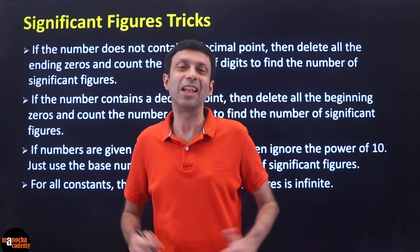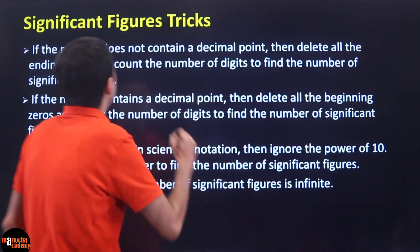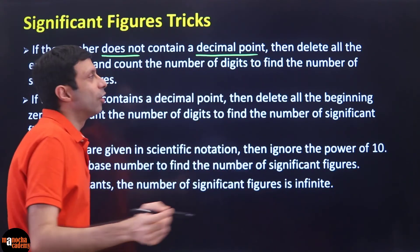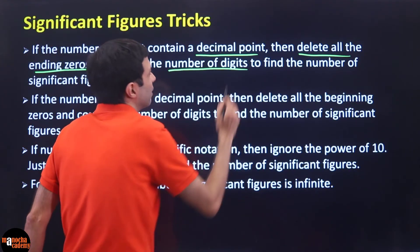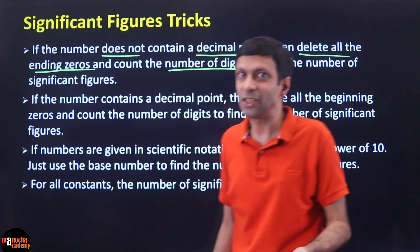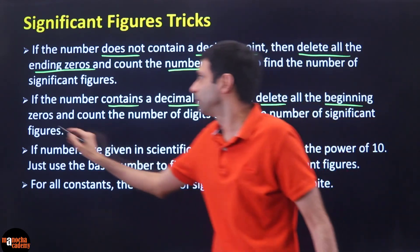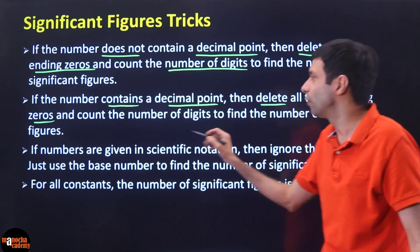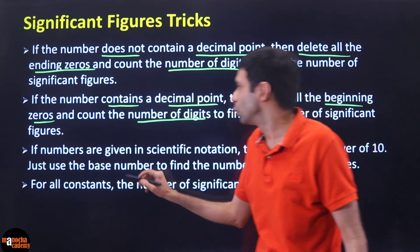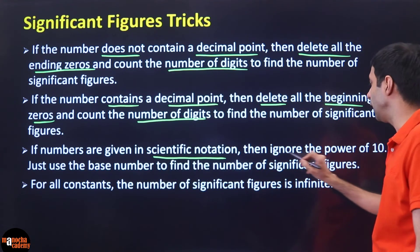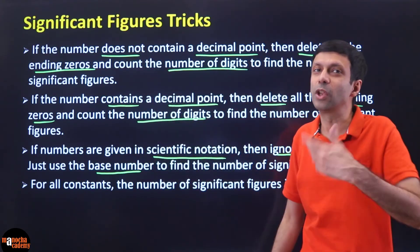Let's summarize the significant figure calculation tricks. Look at the number and see if it has a decimal point. If it does not have a decimal point, delete all the ending trailing zeros and count the digits — that gives the number of significant figures. If it has a decimal point, delete all the beginning zeros and count the digits — that gives the number of significant figures. For scientific notation, ignore the power of 10 and apply these first two rules to the base number.